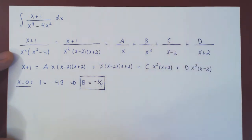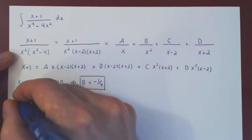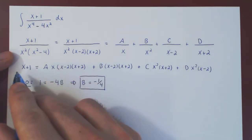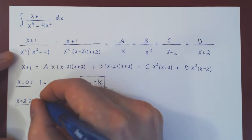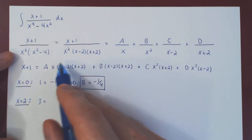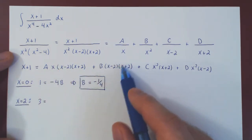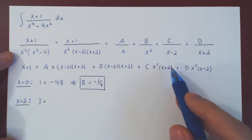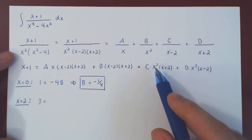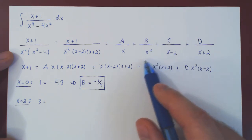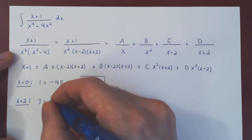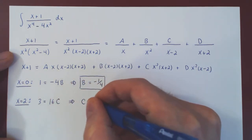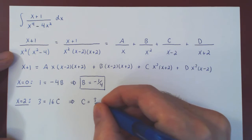Now choosing x equals 2: the left side gives 2 plus 1 equals 3. The A, B, and D terms vanish, leaving C times 2 squared times 2 plus 2, which is 4 times 4 equals 16. So 3 equals 16C, and dividing by 16 gives C equals 3/16.